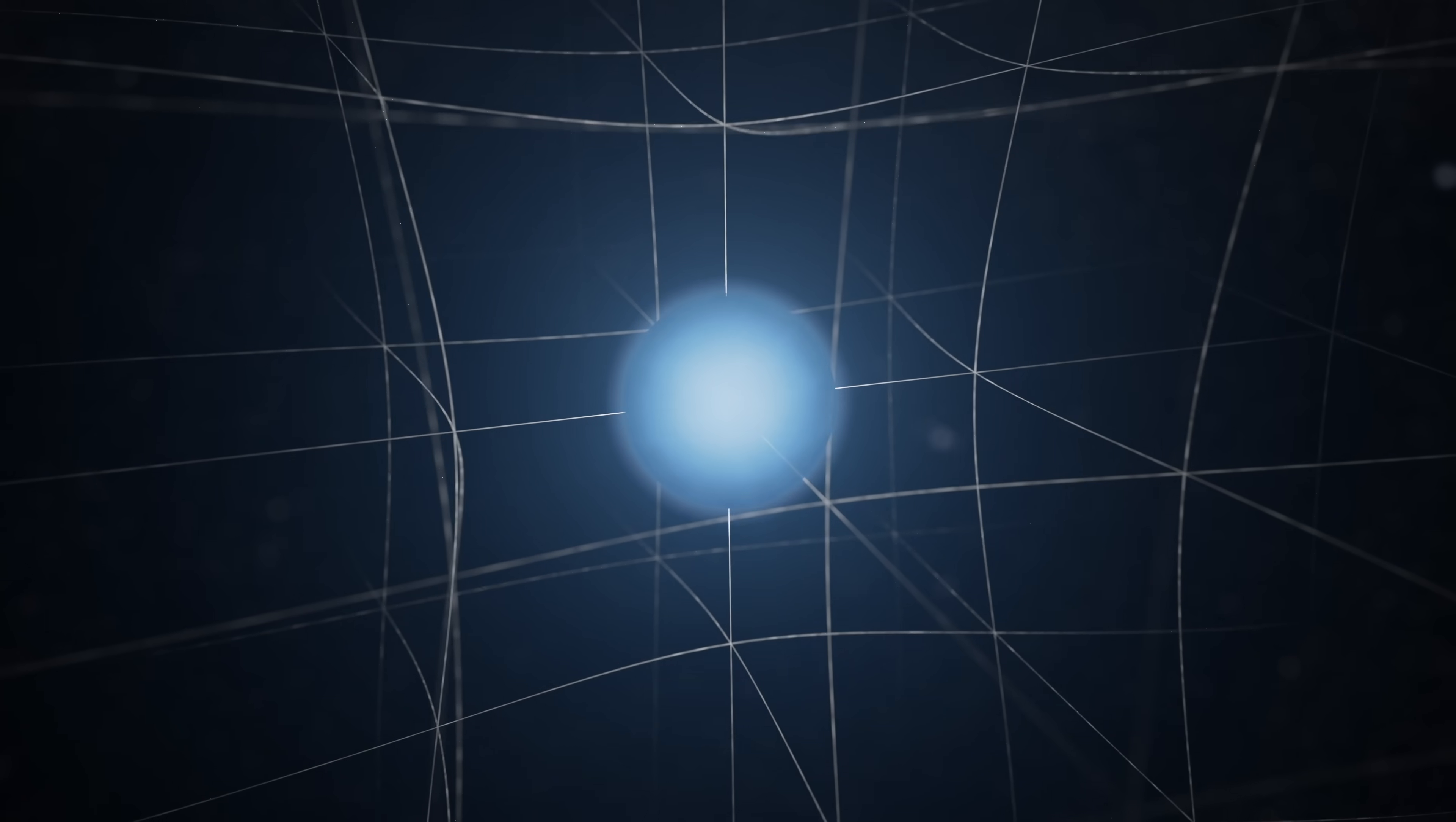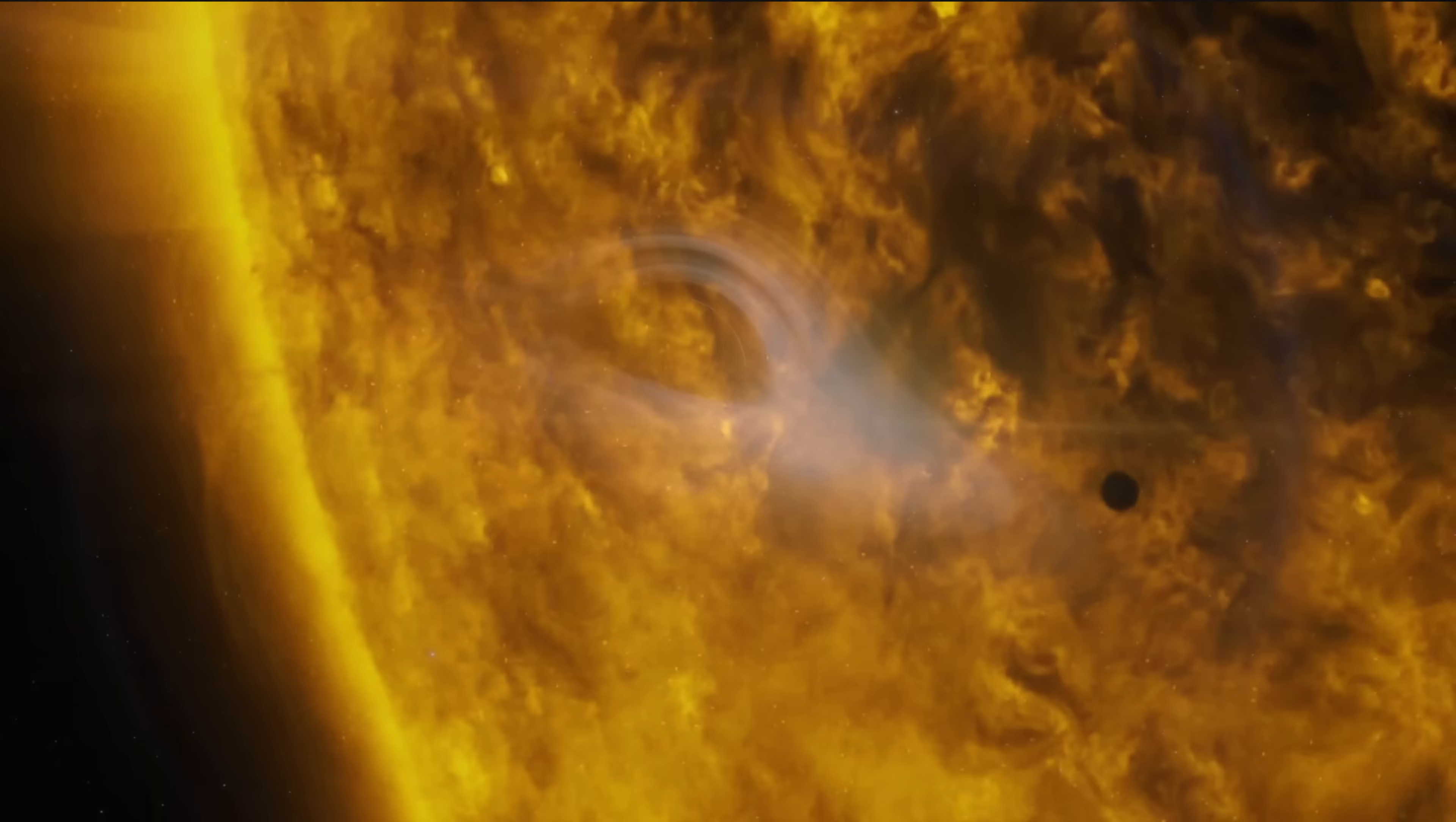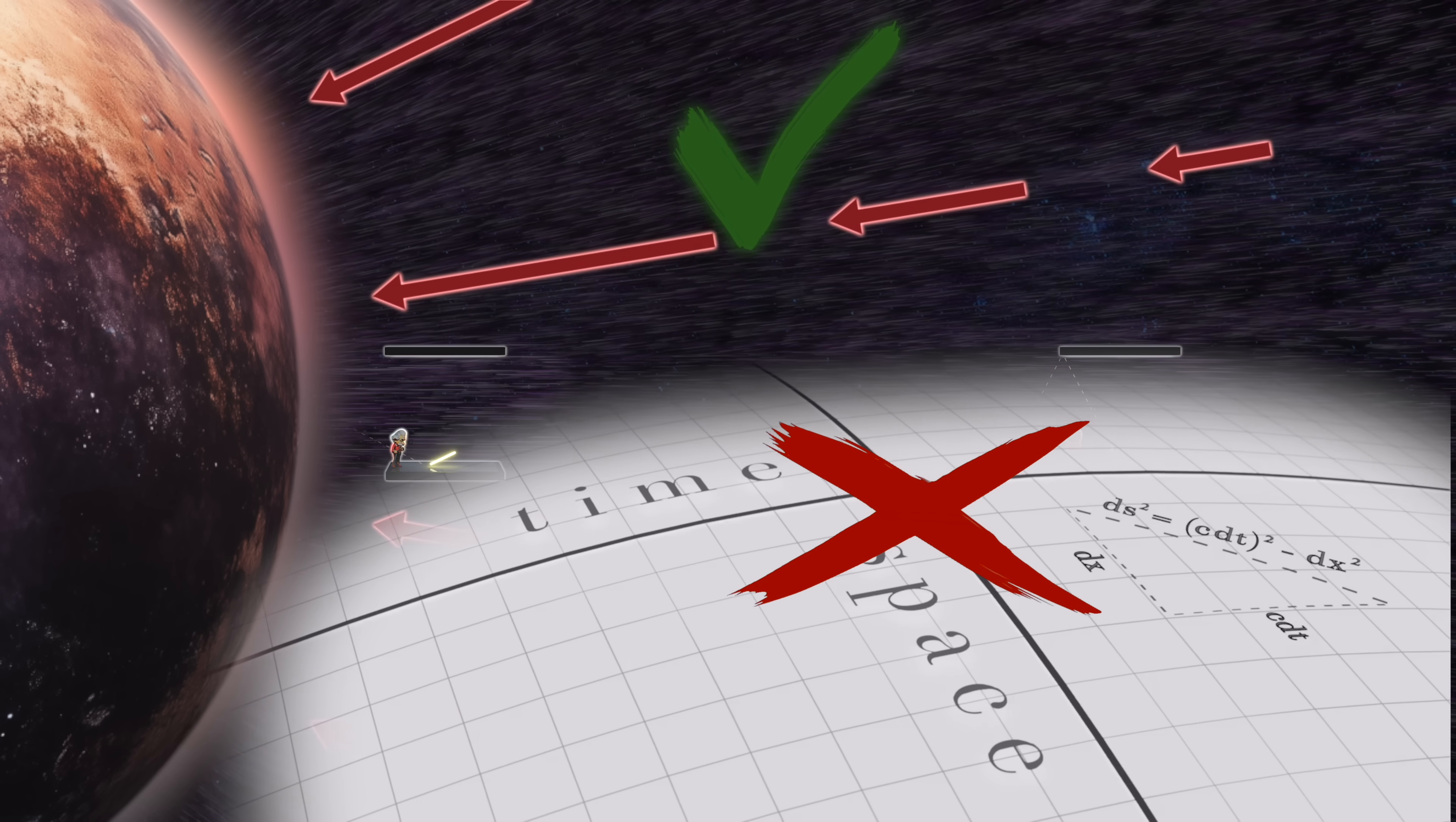But none are as important as asking whether or not this model can account for the other major predictions of general relativity. The bending of light. The precession of Mercury's perihelion. And the complete nature of black holes. Well, the answer to that is, yes, yes it can. And it can do so all without any reference to space-time curvature.